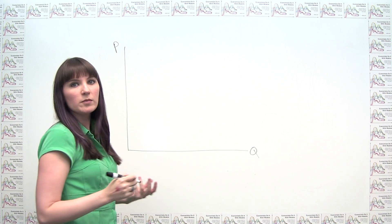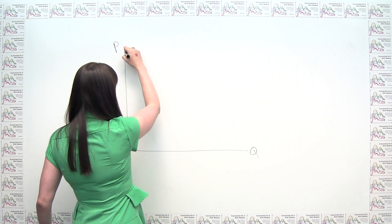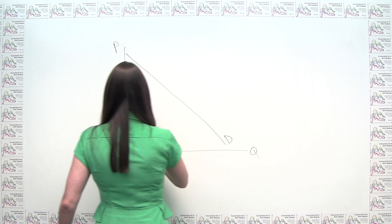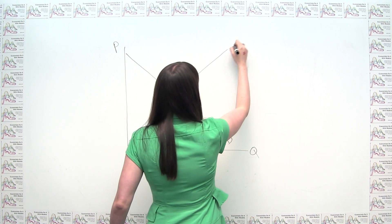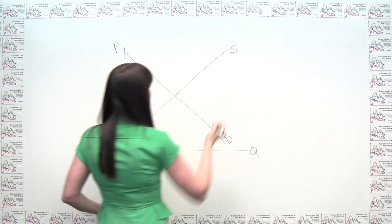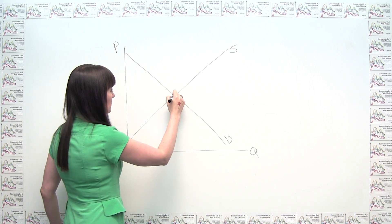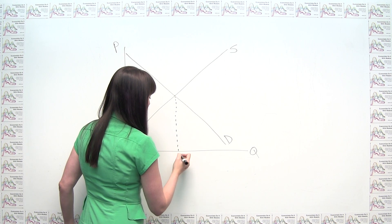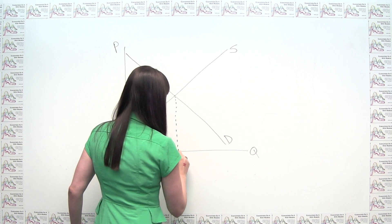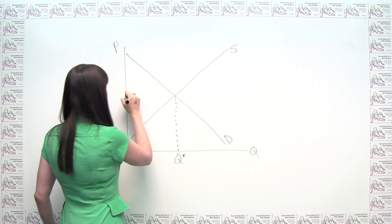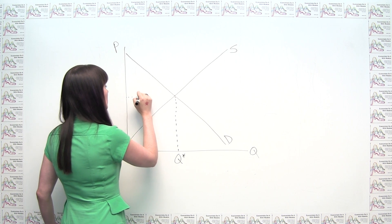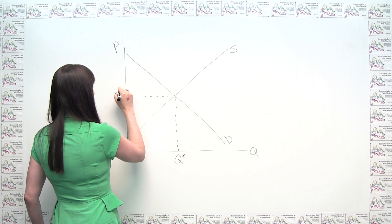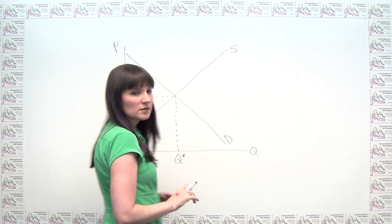It's probably helpful to start by thinking about a demand curve and a supply curve. We know that our economic equilibrium is where the quantity supplied is equal to the quantity demanded, and we just call that Q star. And we know that the market equilibrium price is going to be P star.